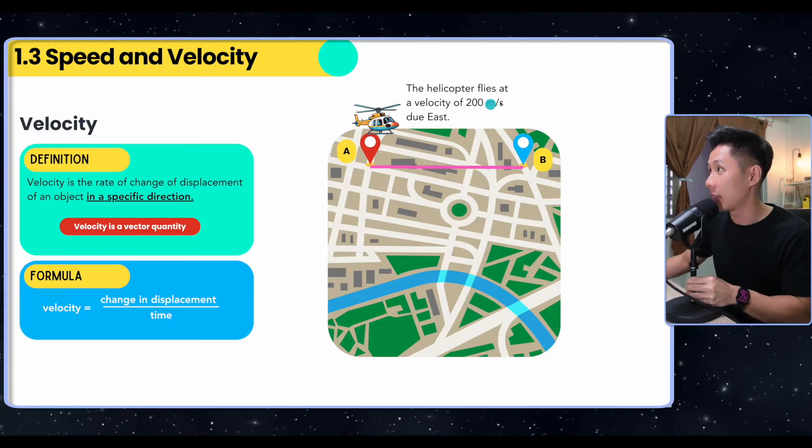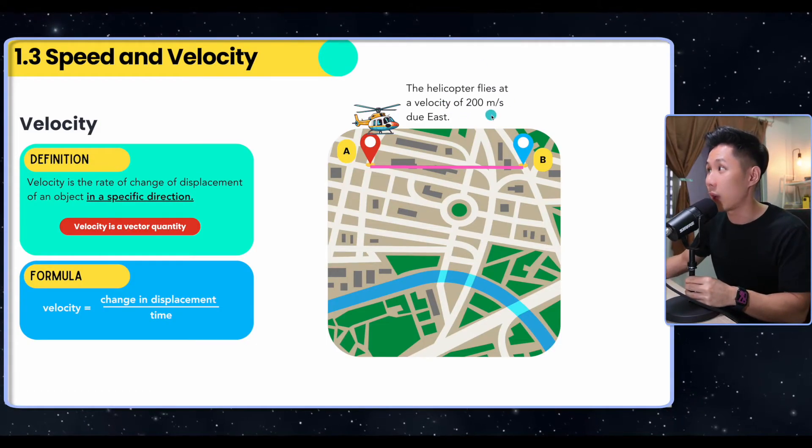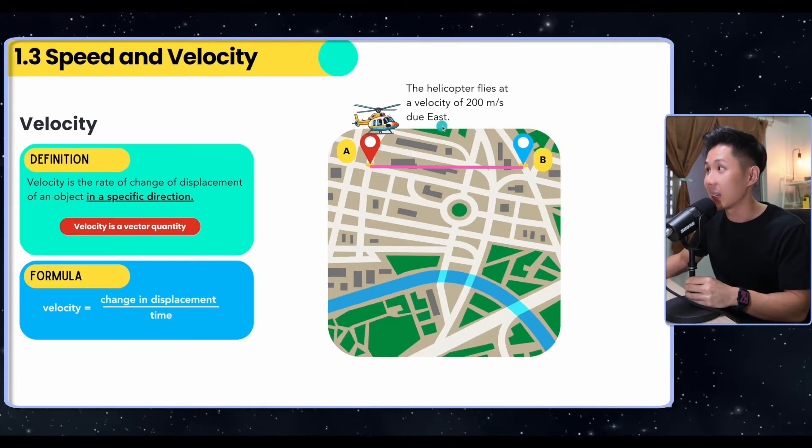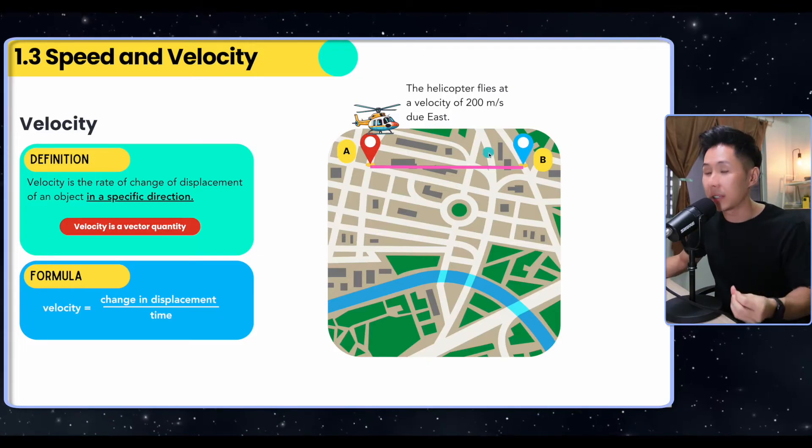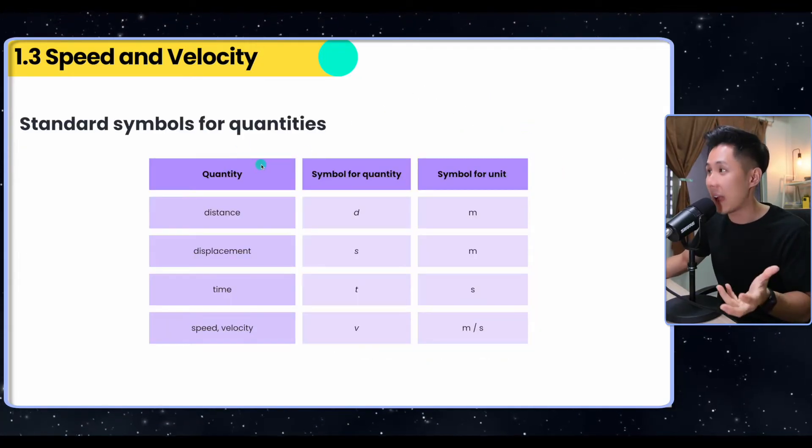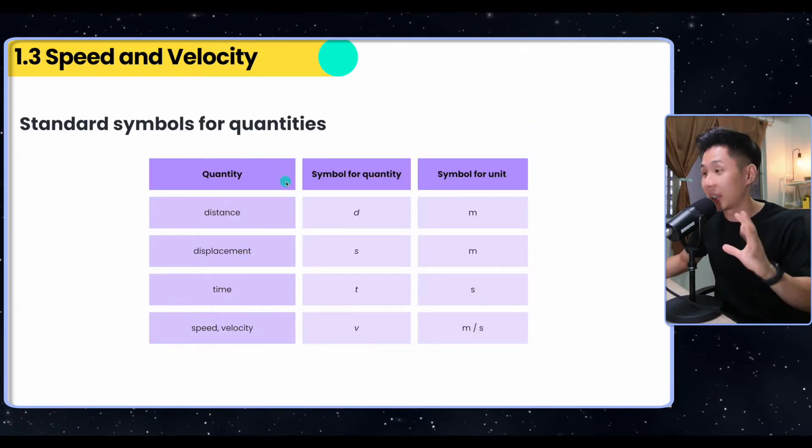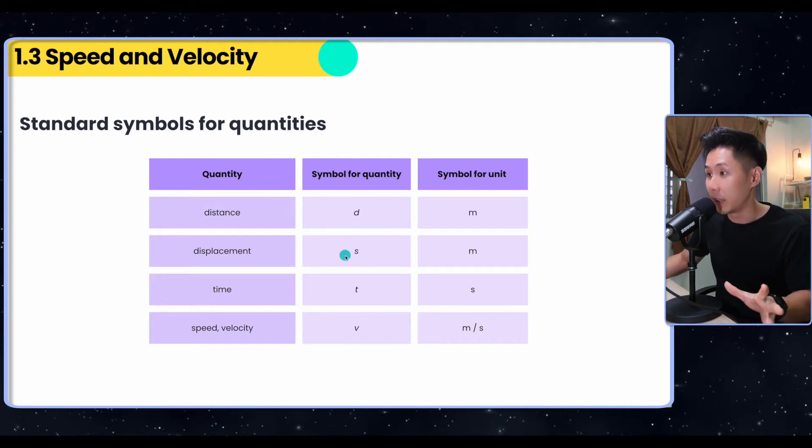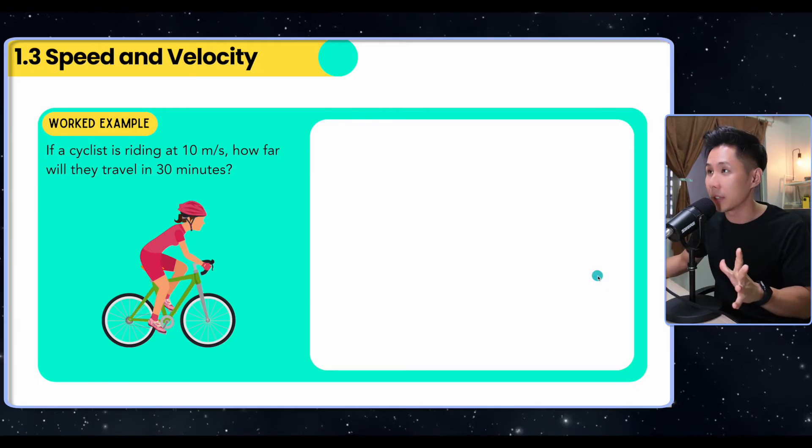This leads us to velocity. Velocity is the rate of change of displacement. An example would be the helicopter flies at a velocity of 200 meters per second due east. This direction part is what you need to emphasize. Here we have the symbol for everything. Again, we have learned most of them in IGCSE. The new one will be displacement, so this is something you need to memorize.